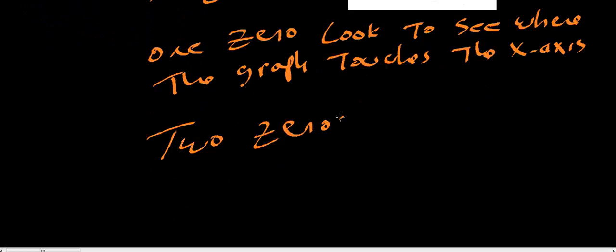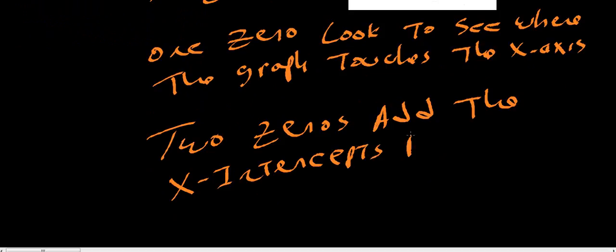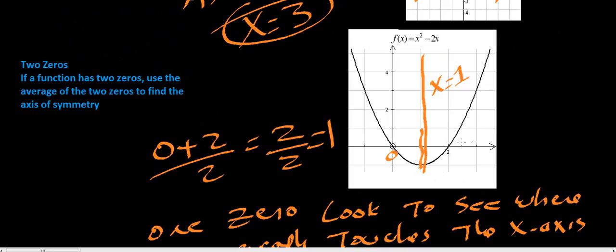Two zeros. Add the X intercepts. That's what we did here. We added zero plus two, divided it by two, or just took the average of our X intercepts.